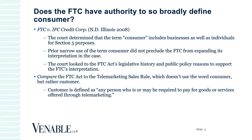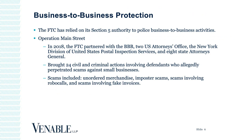Deborah is going to talk for a few minutes about some of the more recent efforts the FTC has undertaken. As Len mentioned, the FTC relies on its Section 5 authority to police business-to-business activities. A major initiative they took semi-recently in 2018 was Operation Main Street, where the FTC partnered with other law enforcement agencies like the U.S. Attorney's Office, State AGs, and others, and together brought 24 civil and criminal actions involving defendants who allegedly perpetrated scams against small businesses.